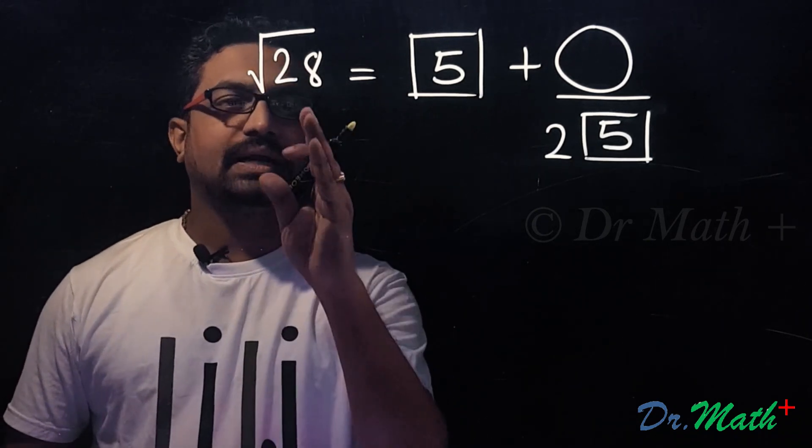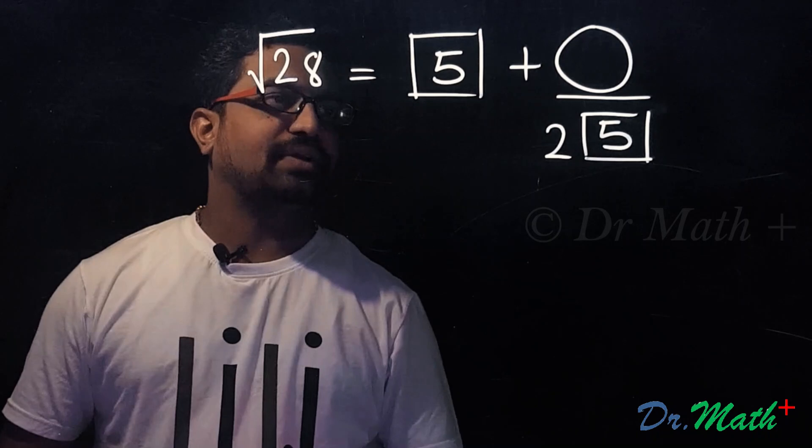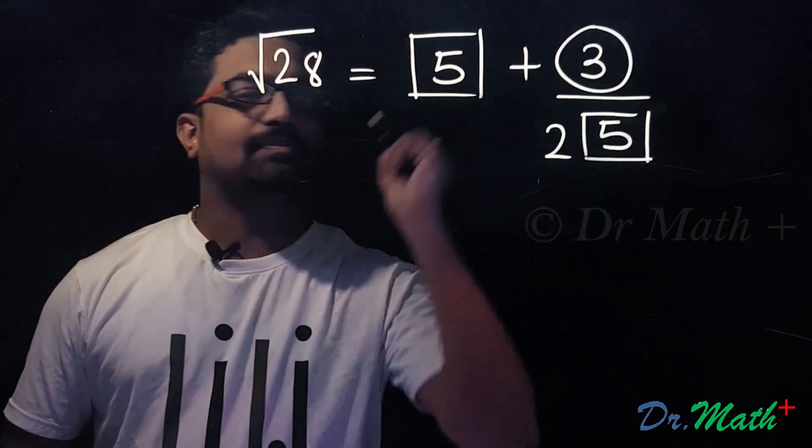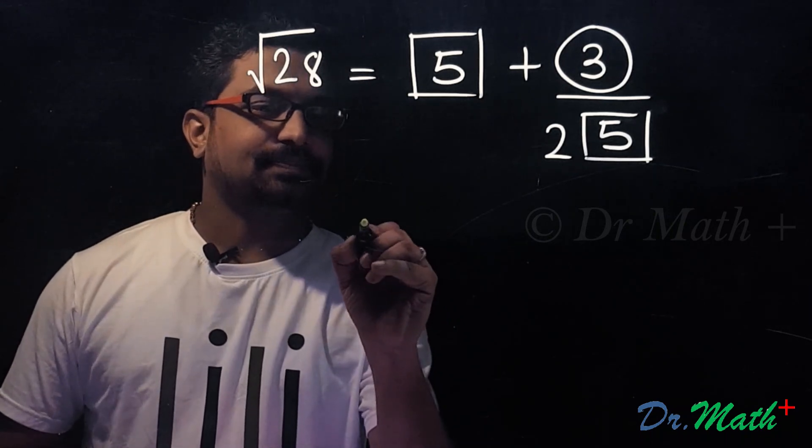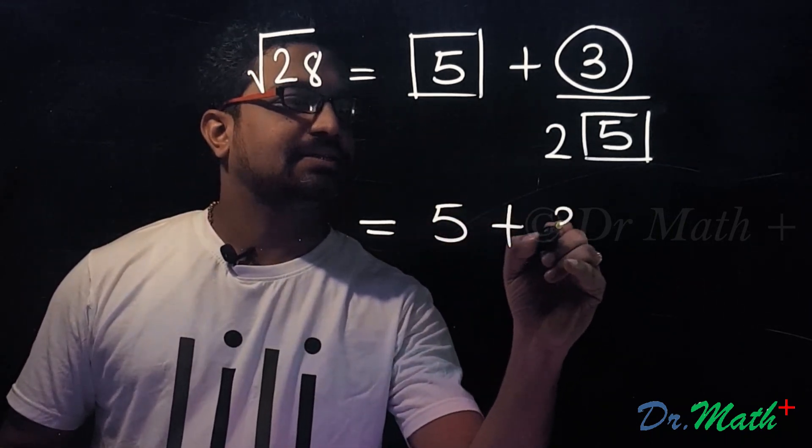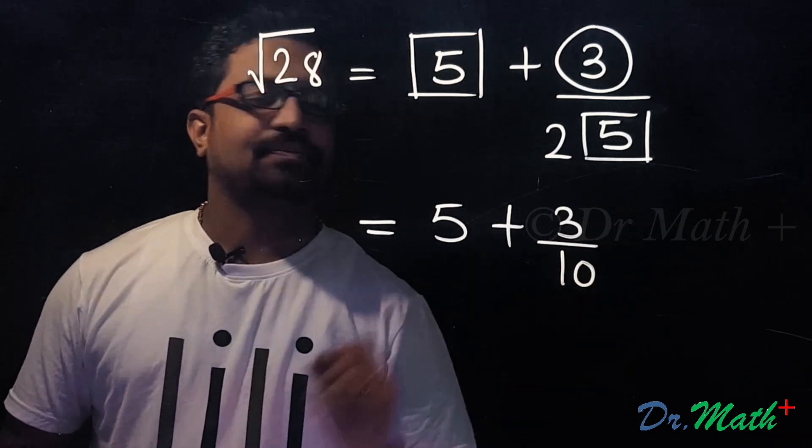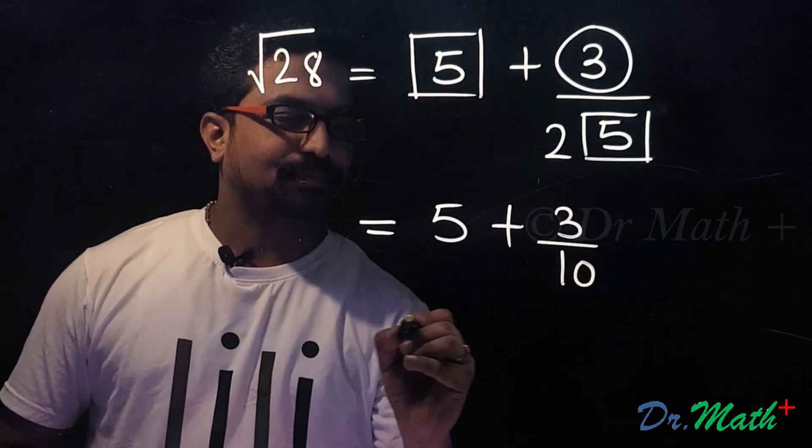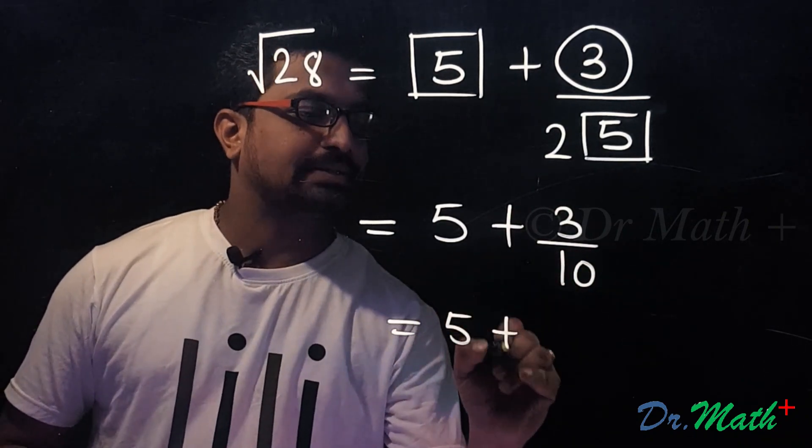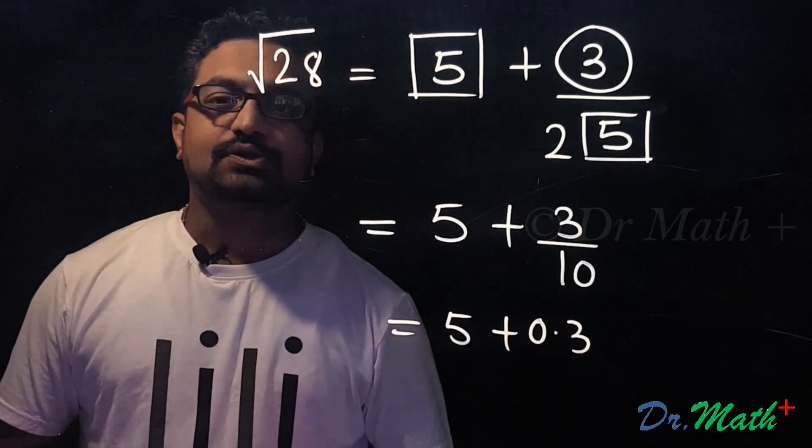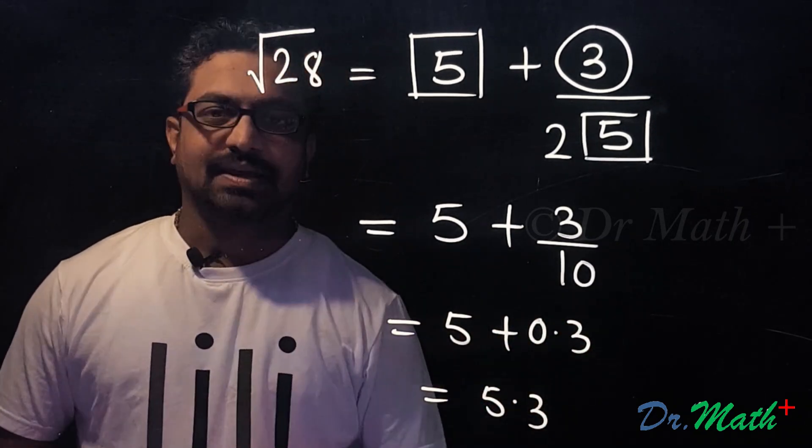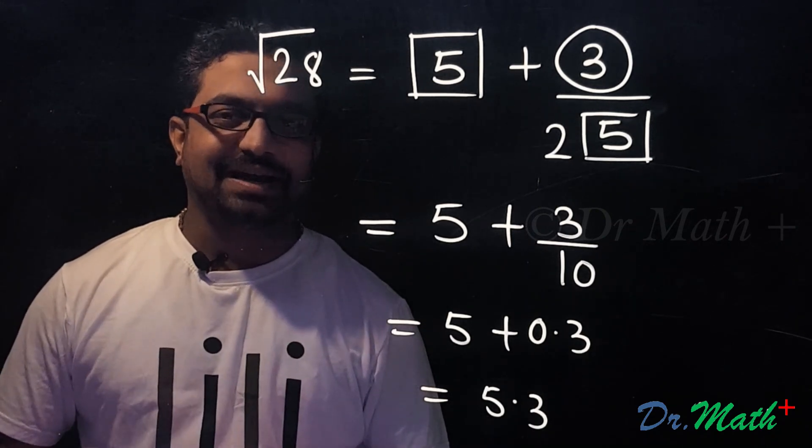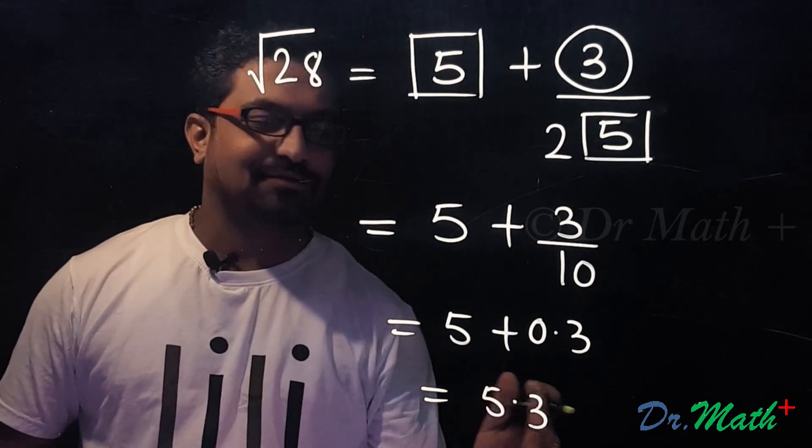So this is 5 plus 3 divided by 10. And what is 3 by 10? It is 0.3, so 5 plus 0.3 is 5.3. Therefore, square root of 28 is approximately 5.3.